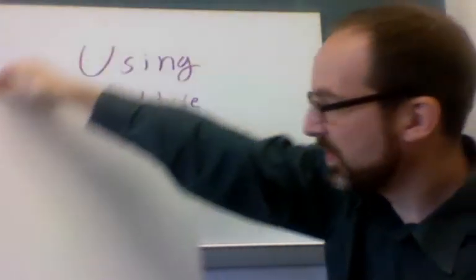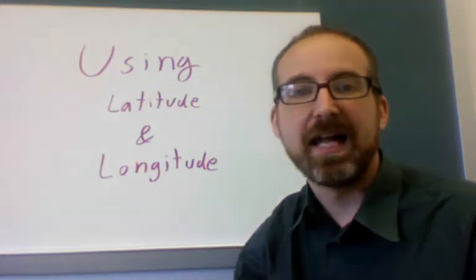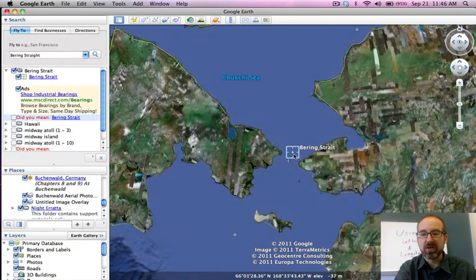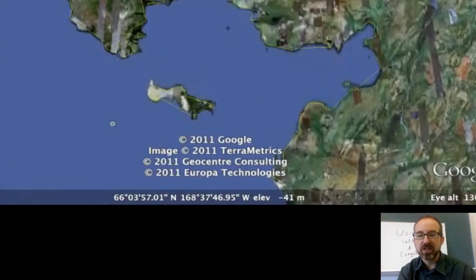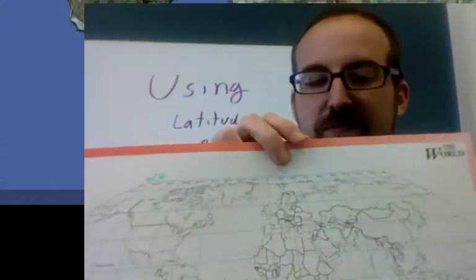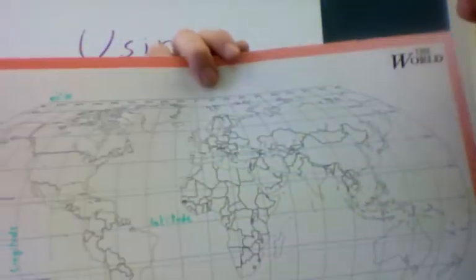Now using latitude and longitude. And to do this we're going to look first at Google Earth. Now I've already looked up the Bering Strait on Google Earth and I hold my mouse pointer right over it and down at the bottom of the screen you can clearly see the latitude and longitude lines. Now we're going to take my map of the world and we're going to look.